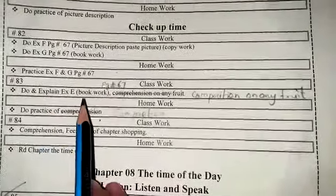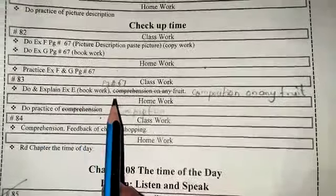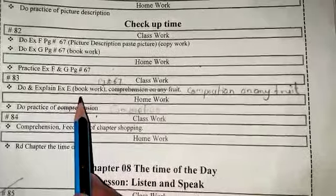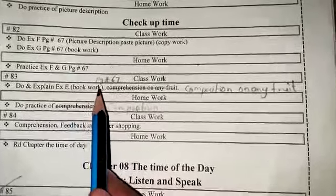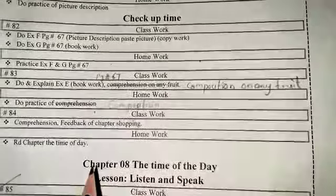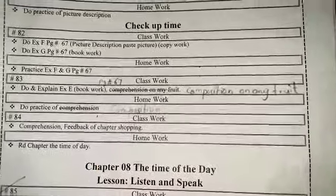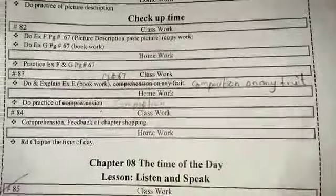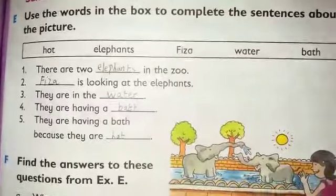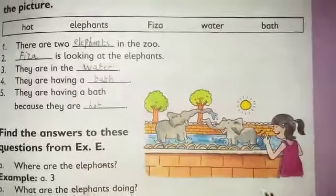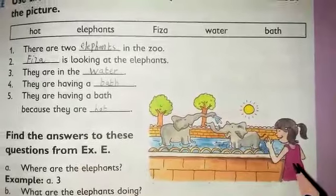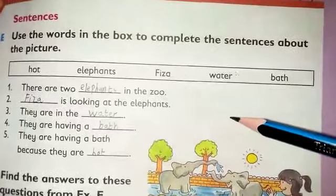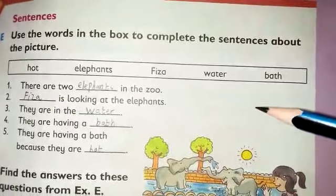You have exercise E. If you don't have a page number, you need to do exercise E in the book which is on page number 67. Open your book to page number 67. This is page number 67 where you have done the elephant work, which was exercise F. You have exercise E which you need to do in the book.